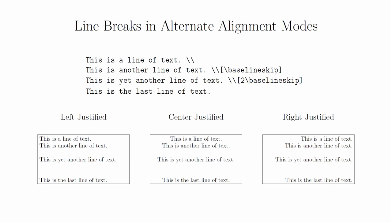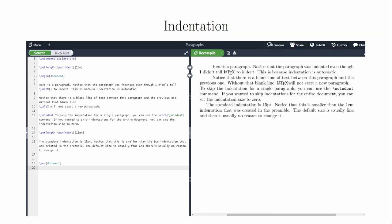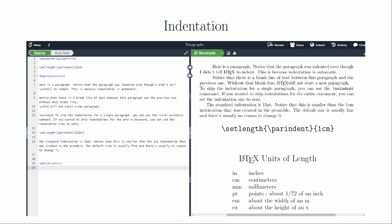LaTeX automatically indents new paragraphs. New paragraphs happen when you have a blank line of code in your document. If you wanted to skip the indentation of a particular paragraph, you can use the noindent command at the beginning of that paragraph. If you wanted to change the indentation of the entire file, you would need to modify the indent size either in the preamble or at the beginning of the document. Here's how the command looks for a 1 cm indentation. Putting the change in the preamble communicates that you intend the change to apply to the entire document.